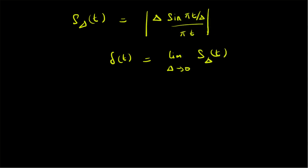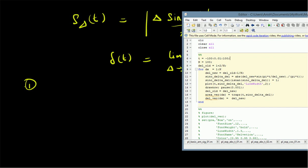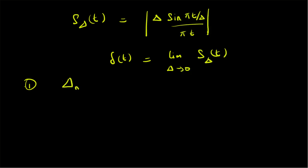The algorithm steps are as follows. Step one: we create the time vector and control the value of delta using a variable n. The updated value of delta is: delta_new = delta_old − 1/n, where n is the number of iterations.